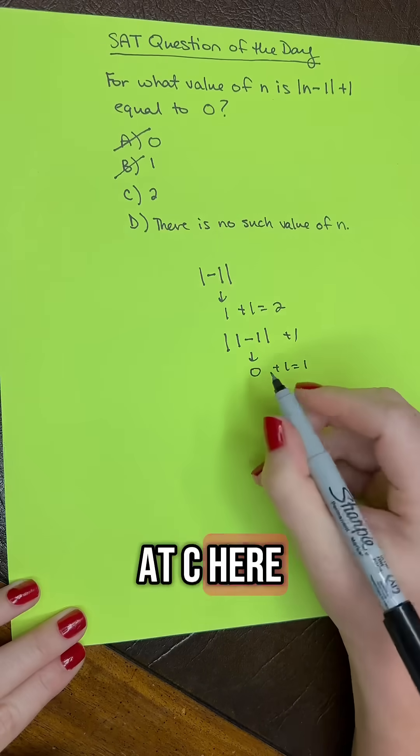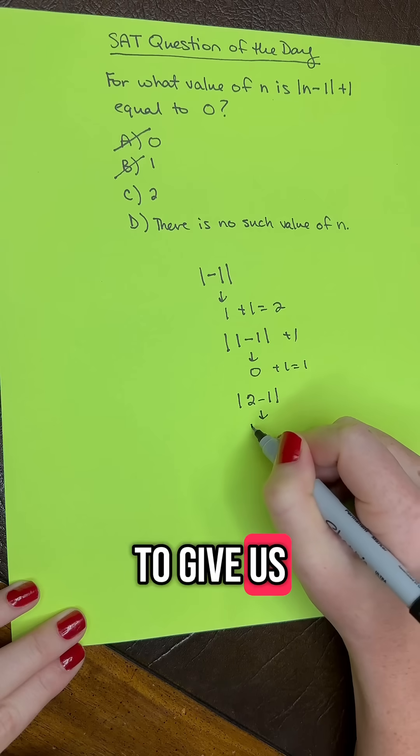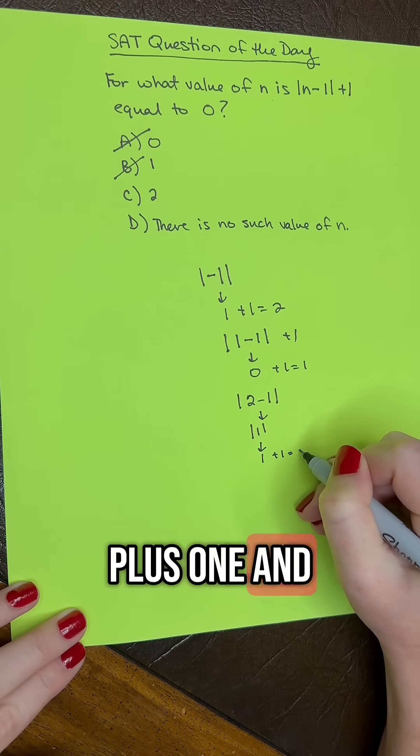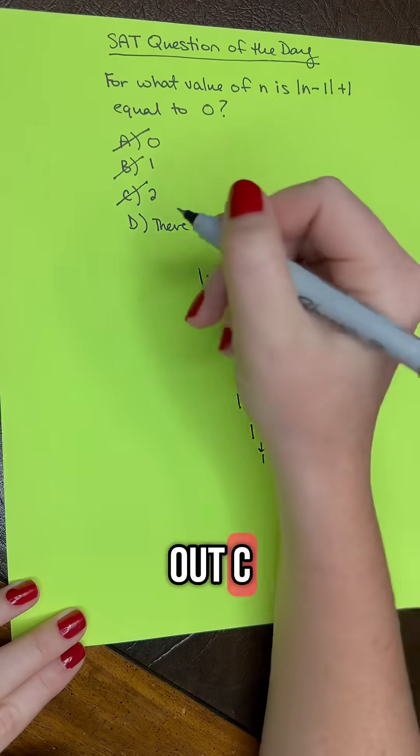Then let's look at C here. We have absolute value of 2 minus 1, which is going to give us absolute value of 1, which is 1 plus 1, and that's going to give us 2, and so it's not 0. Cross out C.